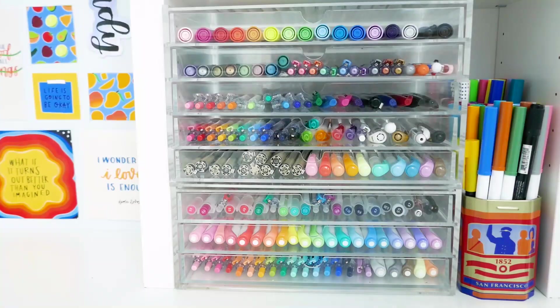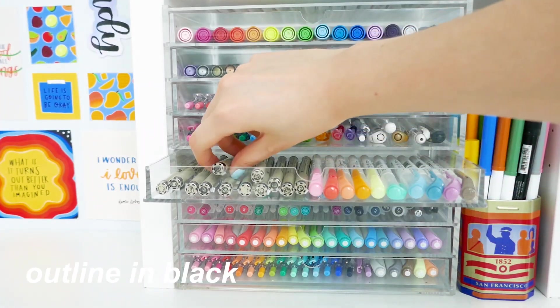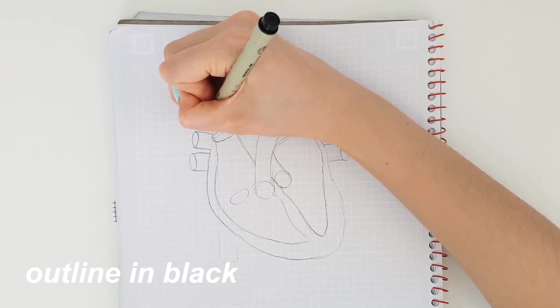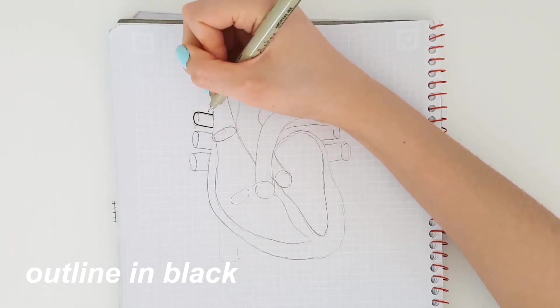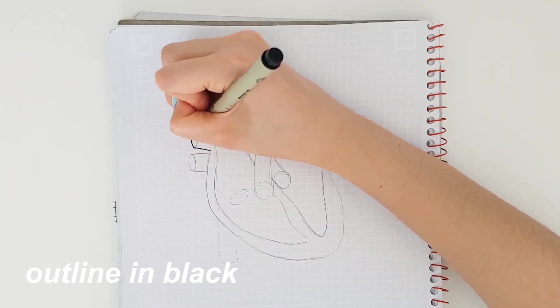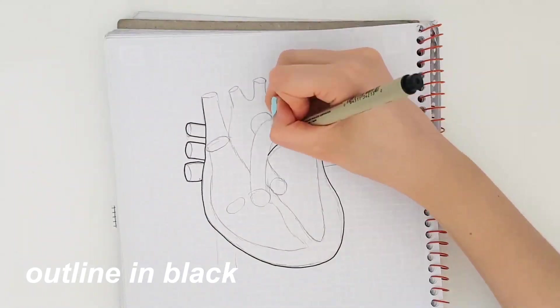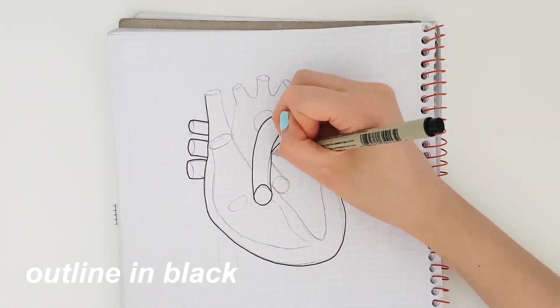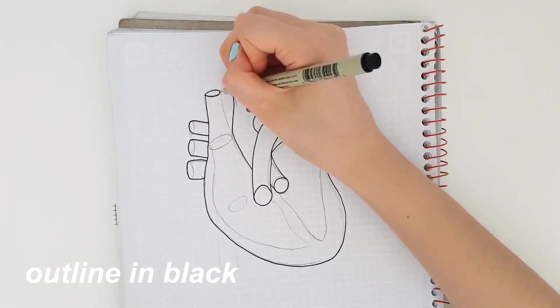So I have the Sakura Pigma Micron fine liners, although anything is good as long as it doesn't smudge. And I'm just gonna go in and outline my diagram. Pretty simple and easy at this point.